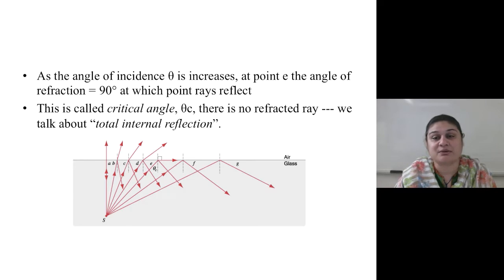There is no refracted ray. When you start from this source, and this source is able to give different angles, as the angle keeps changing at a particular critical level, there is no refraction anymore. All of the ray will be reflected back.